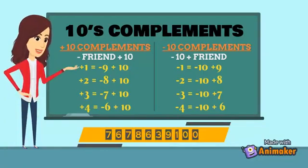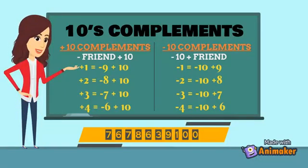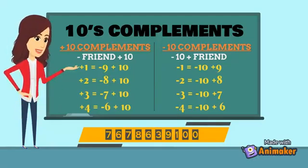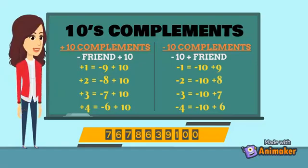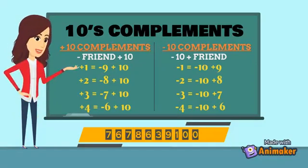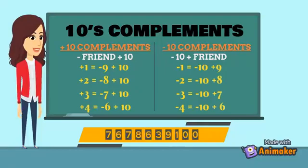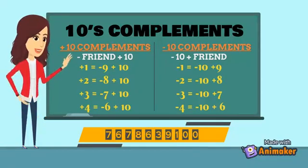For plus ten complement: the basic rule is always subtract first, so you subtract the friend and then do plus ten. For minus ten complement: the basic rule is always subtract first, so you write minus ten plus the friend.